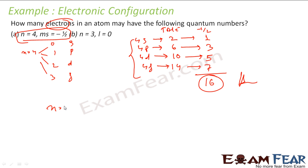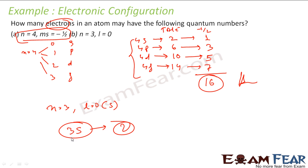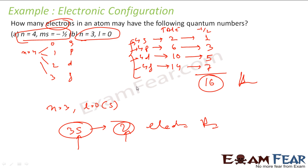For n=3, L=0 — that is the 3S sub-shell. The 3S sub-shell can have only 2 electrons. So for n=3 and L=0, there are only 2 electrons possible. When n=4 and spin is −1/2, we are considering 4S, 4P, 4D, and 4F sub-shells together, and half of their electrons have spin −1/2.